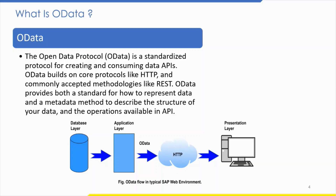OData is based on the HTTP framework. In other words, in the application layer we have an internal table, and that internal table data is passed out through OData to HTTP. In a single HTTP request, you can get both the data and metadata, or table structure.